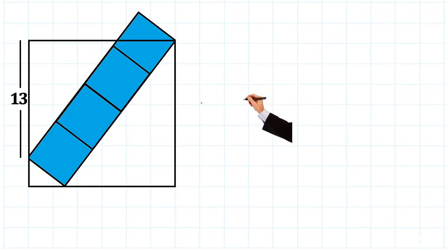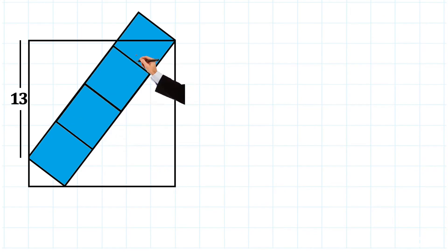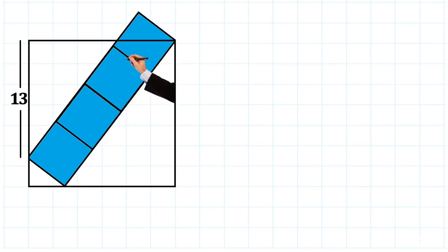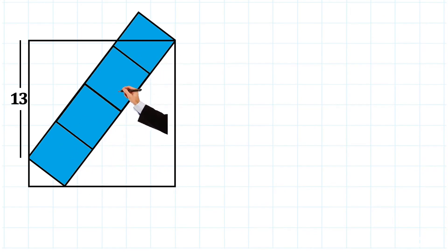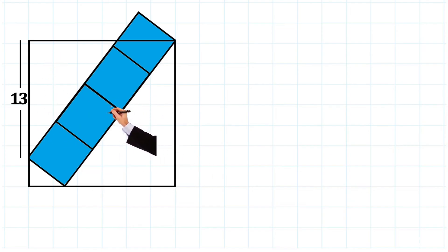Ladies and gentlemen, boys and girls, check out this exercise. We need to find the shaded area — that is the area of these four squares. Let's do it. Notice that all these figures are squares.